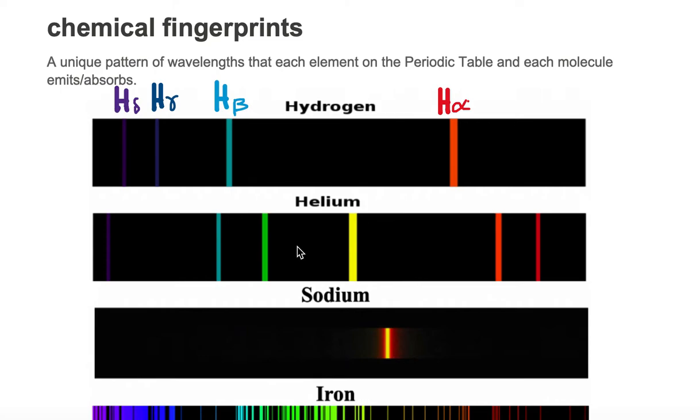It also emits two other colors but they're in the ultraviolet band. So they're ultraviolet colors. We're only going to focus on the visual wavelength band in this example.